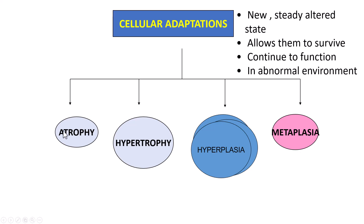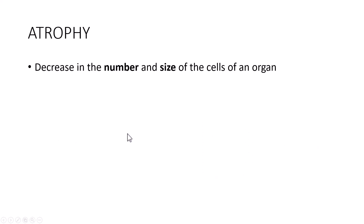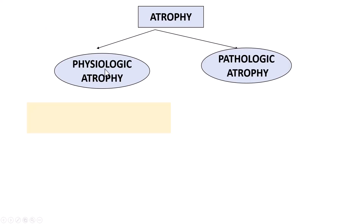Let us try to understand what atrophy is. Atrophy is basically a decrease in the number and size of the cells of a given organ. Remember, there is a decrease in the number of cells as well as the size of the cells of the given organ. And atrophy is broadly categorized into physiologic atrophy and pathologic atrophy.